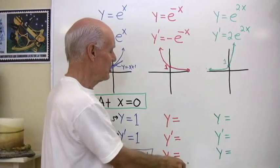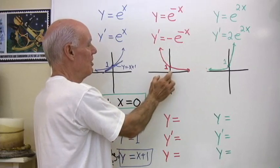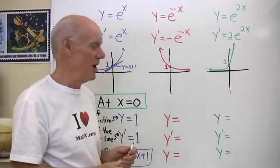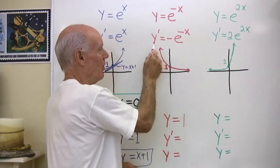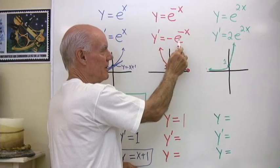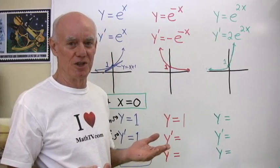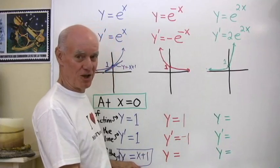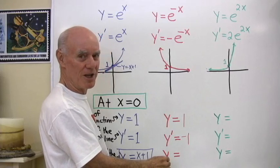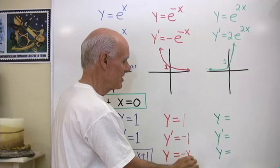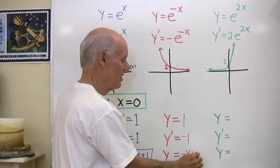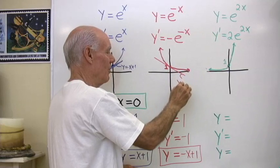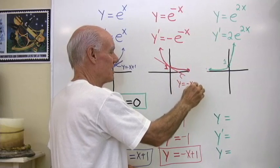For the function y equals e to the negative x, when x equals 0, y equals e to the negative 0, which is e to the 0, which is 1. y' equals negative e to the negative 0; e to the negative 0 is 1, so I have negative 1. That's the slope of the tangent line, and the equation of the tangent line is y equals negative x plus 1.